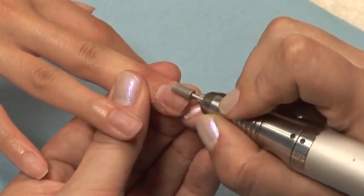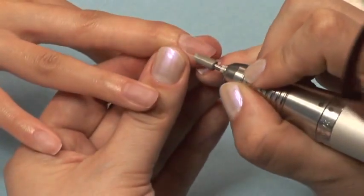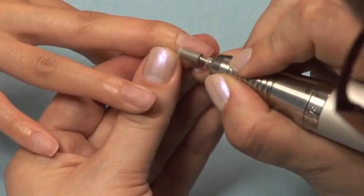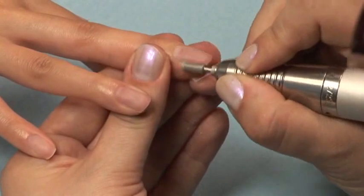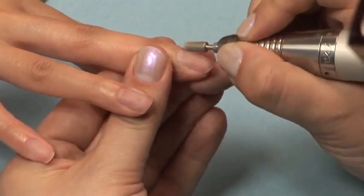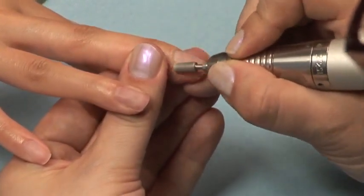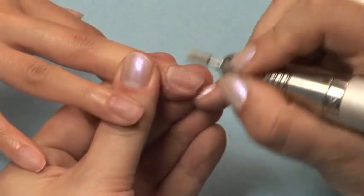Do not apply pressure when using the e-file. The weight of the handpiece is enough pressure on the nail. Always keep your bit parallel to the nail. Do not be afraid to go right up to the surrounding skin with this bit. It will not cause harm when used properly.